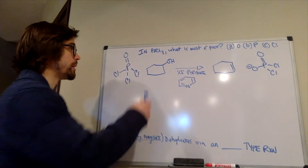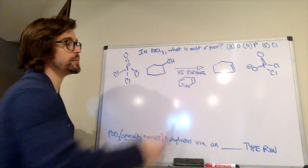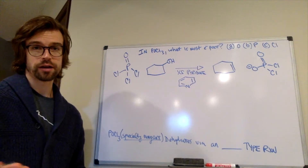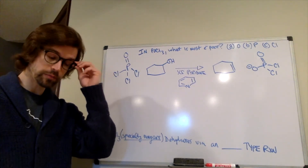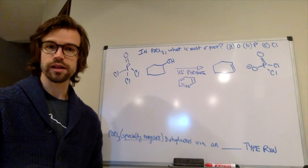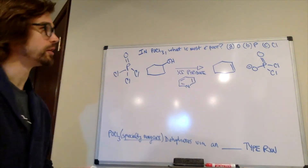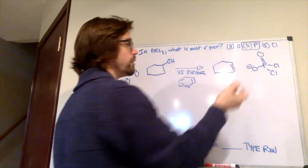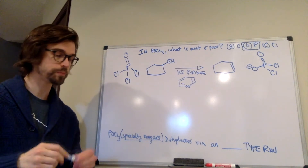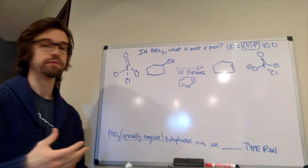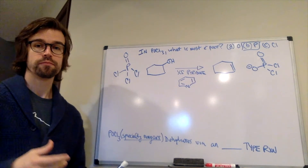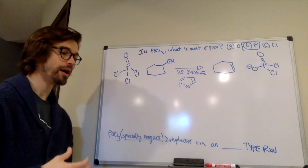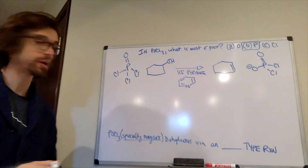The first thing we want to ask is: in POCl3, what is the most electron-poor atom? How would you figure that out? Take out your periodic table — you have one in your textbook, or you have the internet. Phosphorus is the most electron-poor of all the atoms in POCl3. So if this is our electrophilic component, the most partially negative thing is going to add to that most partially positive atom on the POCl3, and that's what happens.